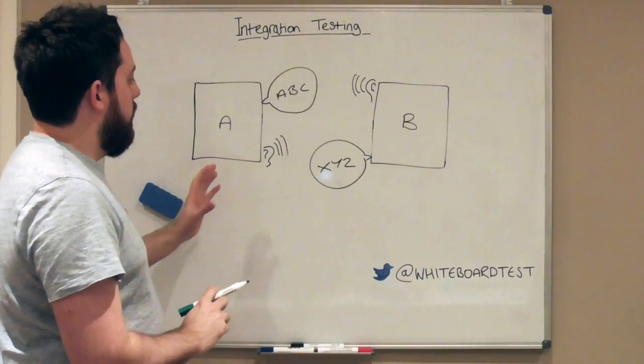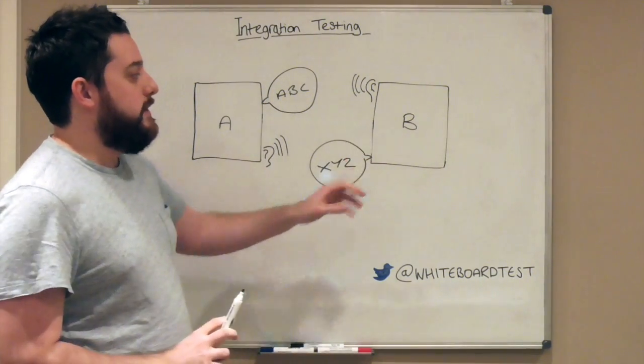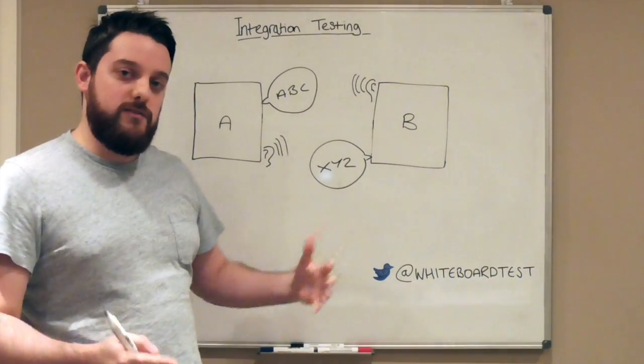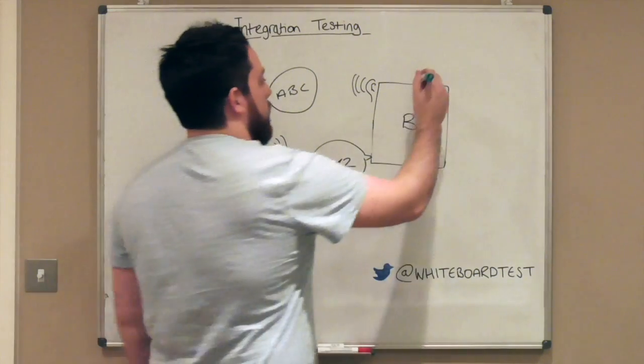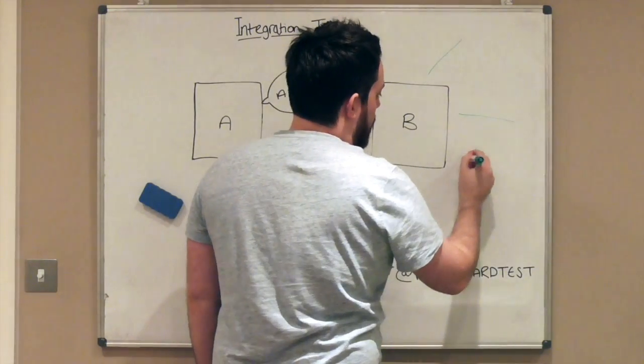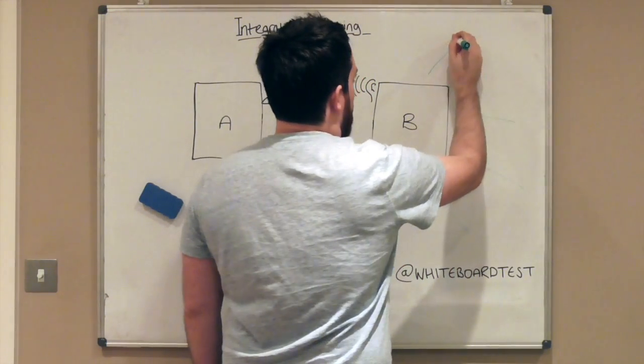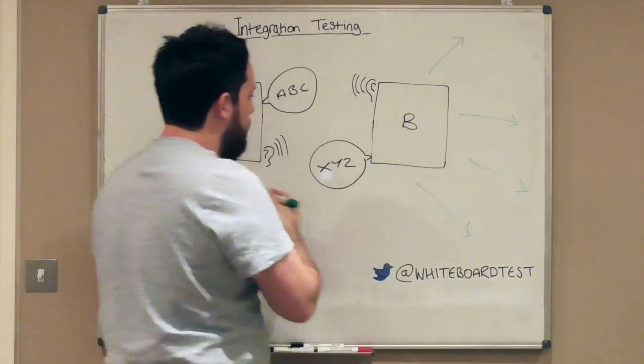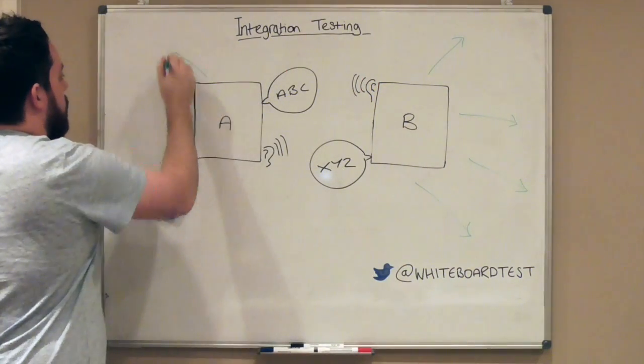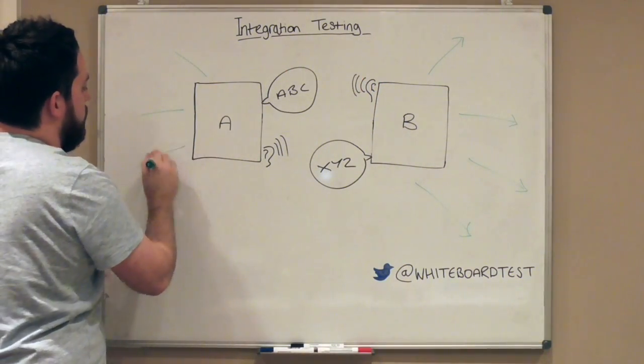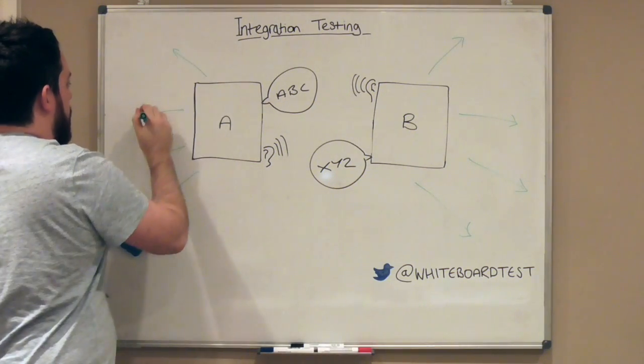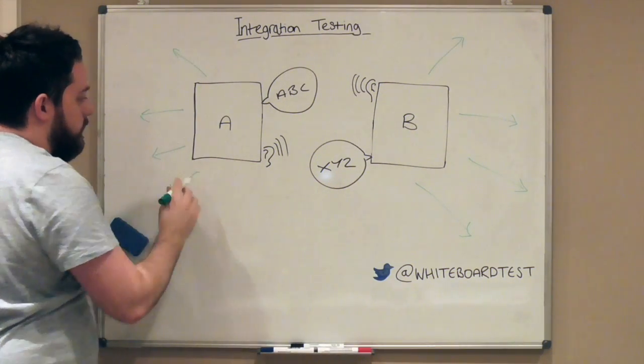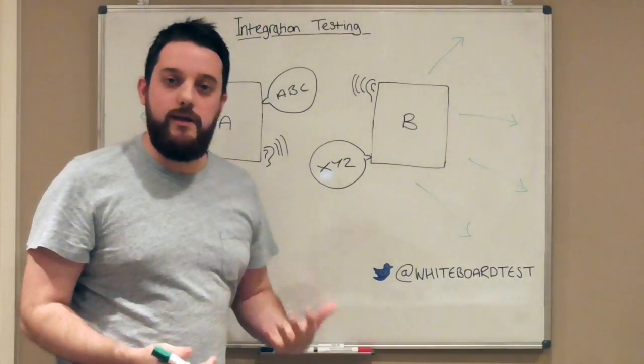But what about further afield? If these two have a relationship, what can I cause to happen on B that might have an impact across the rest of B? So what happens over here? What happens further afield? What else is B integrated with? And the same for A. What happens over here?